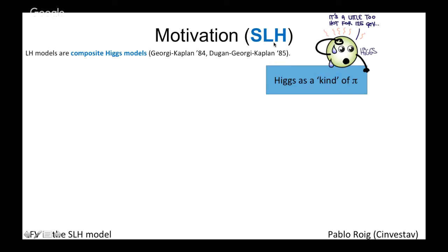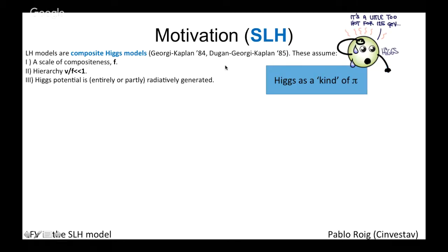The motivation for the Simplest Little Higgs model goes back to composite Higgs models dating back more than 30 years. The general idea is to understand the Higgs lightness as a result of it being a pseudo-Goldstone boson, like a pion in this sector. In this class of models there is a scale of compositeness f, with a hierarchy between the electroweak scale and f, so that the ratio v/f is small and the perturbative expansion converges quickly.